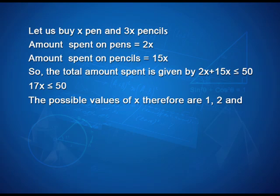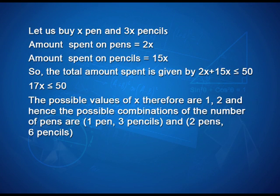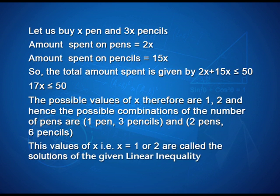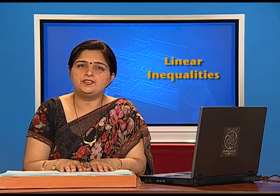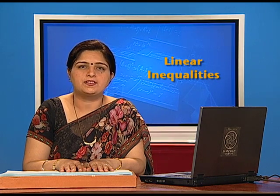Therefore, 17x ≤ 50. The possible values of x are 1 and 2, and the possible combinations of pens and pencils are: 1 pen and 3 pencils, and 2 pens and 6 pencils. The values of x as 1 and 2 are called solutions of the given linear inequality.